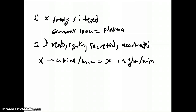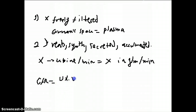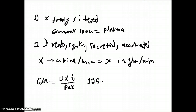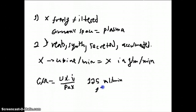Applying the same formula: glomerular filtration rate equals the urine concentration of X multiplied by the flow, divided by the plasma concentration. You should get a GFR of about 125 milliliters per minute, or about 180 liters per day.